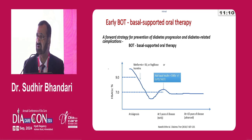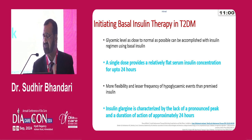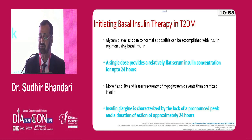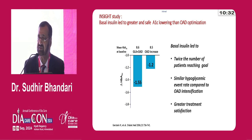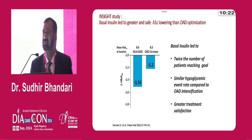If you add basal insulin in time to the OAD therapy, there is consistent maintenance of HbA1c, which is well documented. Initiating basal therapy in type 2 diabetes has a significant advantage of flat serum insulin concentration for 24 hours. Insulin glargine is characterized by lack of a pronounced peak and a duration of action of approximately 24 hours. Basal insulin led to greater and safer HbA1c lowering than oral anti-diabetic drugs alone, twice the number of patients reaching target, similar hypoglycemic event rate compared to OAD intensification, and greater treatment satisfaction — a real sense of well-being comes with basal insulin introduction.